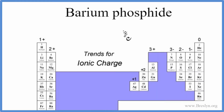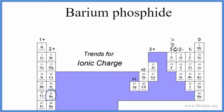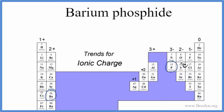In this video, we'll write the formula for barium phosphide. Barium is right here on the periodic table, and phosphorus is right here. Barium is a metal, and on this side we have the non-metal. Metal and a non-metal — that's an ionic compound.